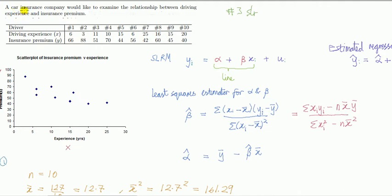Now what we have in this example is a car insurance company would like to examine the relationship between driving experience and insurance premium. We have ten drivers, and for each driver we measure their driving experience and insurance premium. Let's say X is measured in years and Y is measured in dollars. So each driver has two measurements.